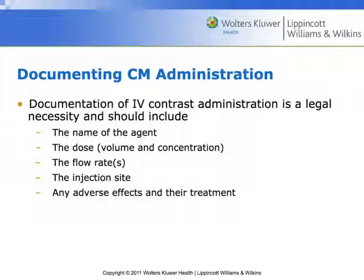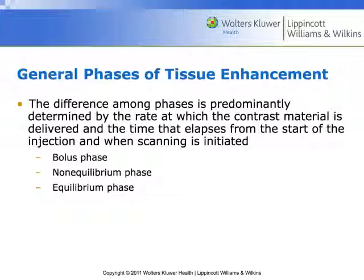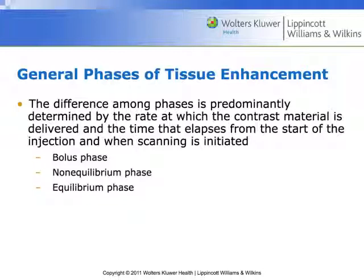We talk about three general phases of tissue enhancement, though technologists normally use the language arterial, venous, and delay rather than these textbook terms. Bolus phase means an arterial phase. Non-equilibrium is that venous phase of contrast enhancement. And one of the interesting things about the equilibrium phase mentioned in the book is it may actually be worse than even having not injected contrast. We have a very narrow window, and outside of that window the contrast may actually be detrimental to the diagnostic value of the study.